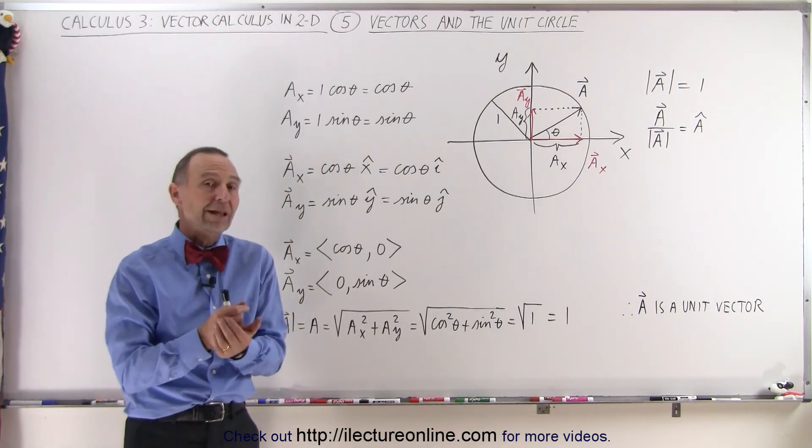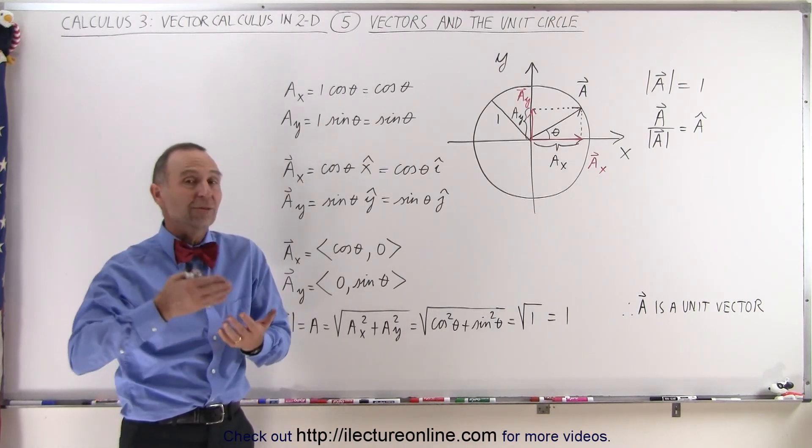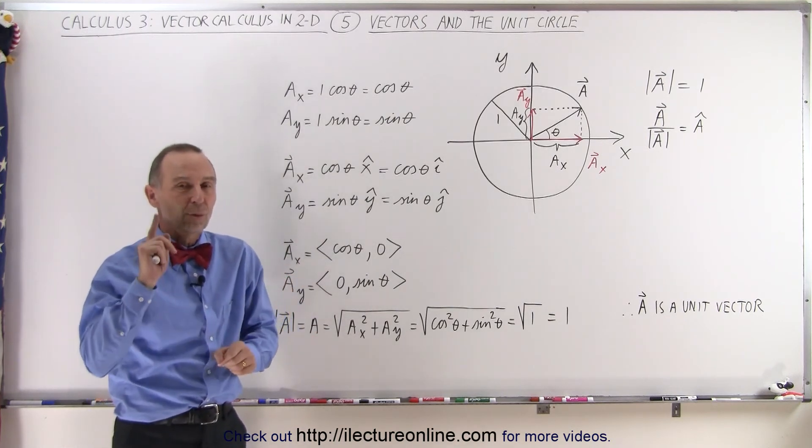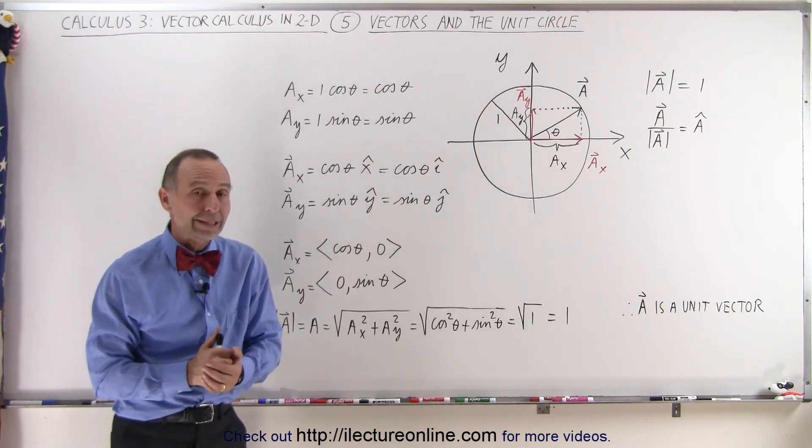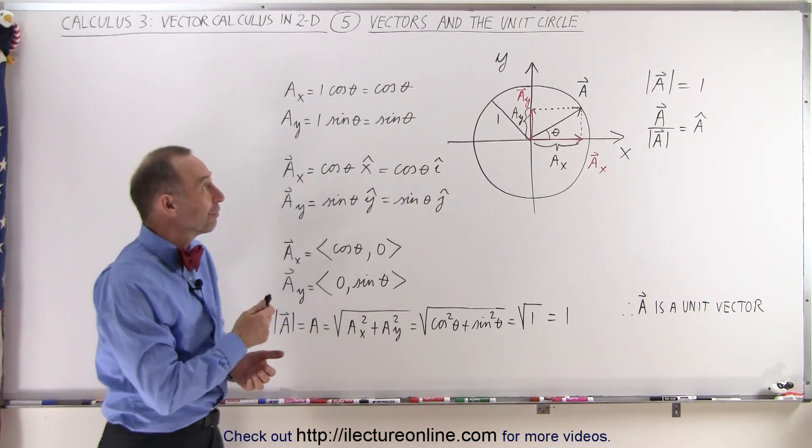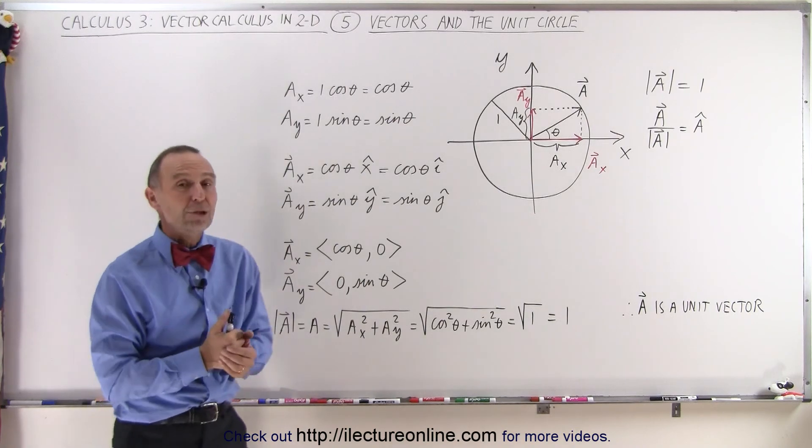Of course, we want that to be unitless, so we're not talking about newtons or meters per second squared. We simply say the magnitude of a is equal to one, no units involved, and therefore we can call it a unit vector. And that's what we mean by unit vector inscribed by the unit circle.